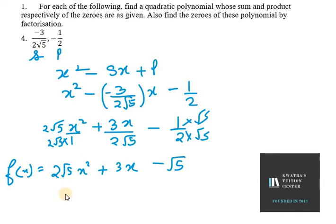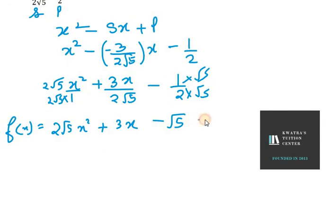Now we need to find the zeros of the equation, so it will be equal to 0. We need to split the middle term. We have A as 2√5 and C as √5, so 2 × √5 × √5 makes 10. We need to split 10 such that they make 3x. So we have 5 and 2.